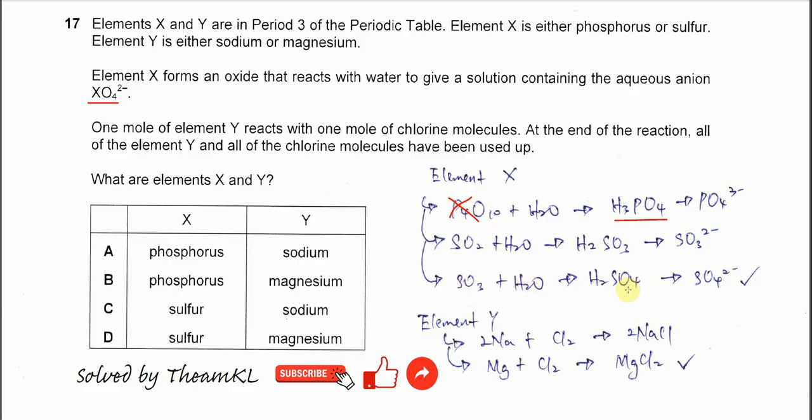With water it will form H2SO4 so it will form sulfate SO4 2 negative. So now we know that the X is sulfur, C or D.